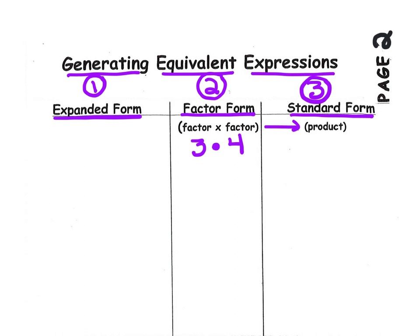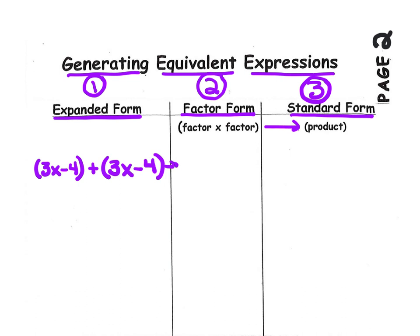Let's start by representing an expression that is expanded. Let's take 3x minus 4 and add it to itself. This, of course, is repeated addition. But we know we can represent repeated addition as multiplication. So as we move across the table, we're going to write this as 2 times the quantity 3x minus 4. Now it's written as a multiplication problem.